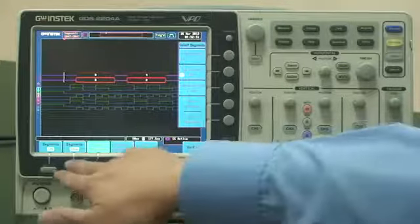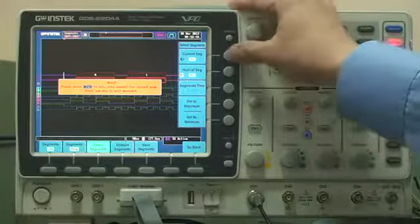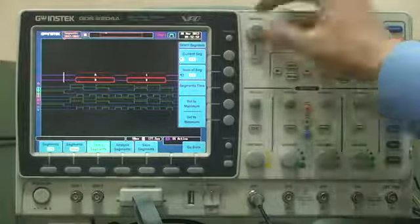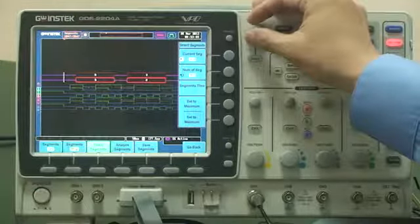Press stop. To observe a current segment, press current set. And use variable knob to select desired segments.